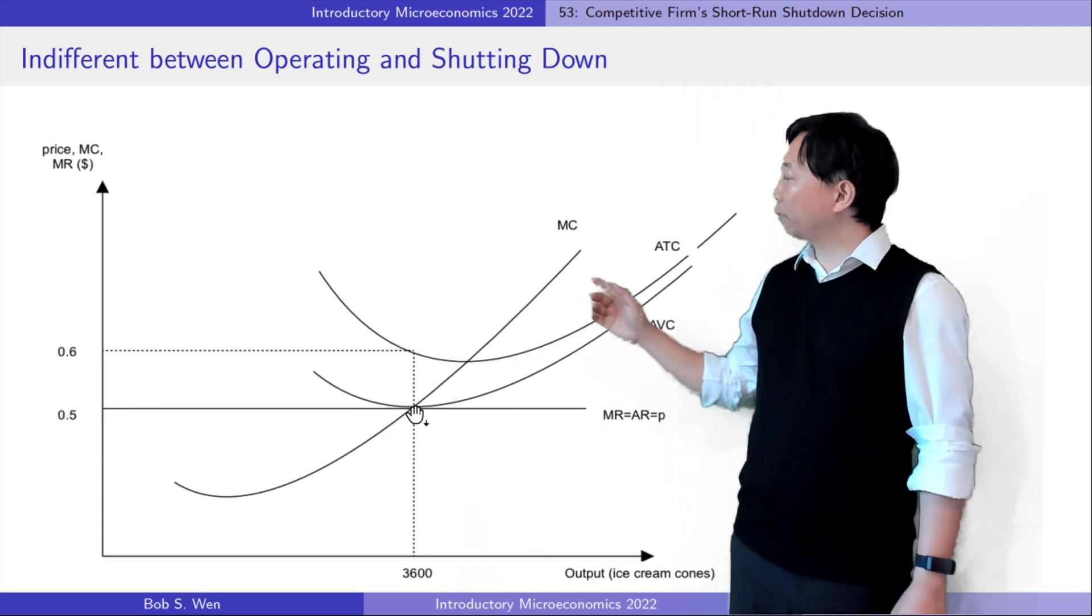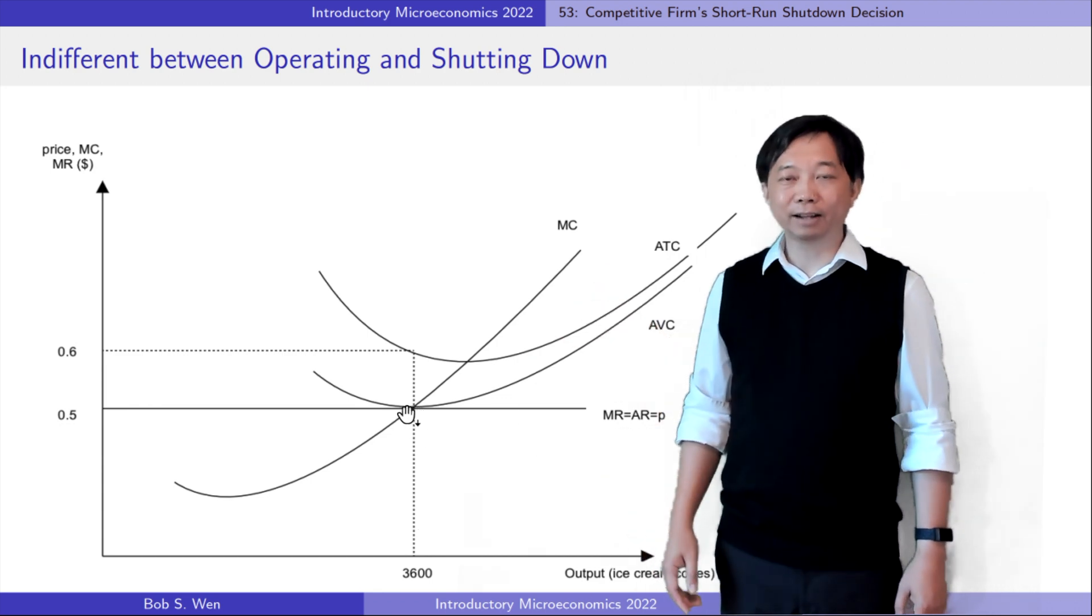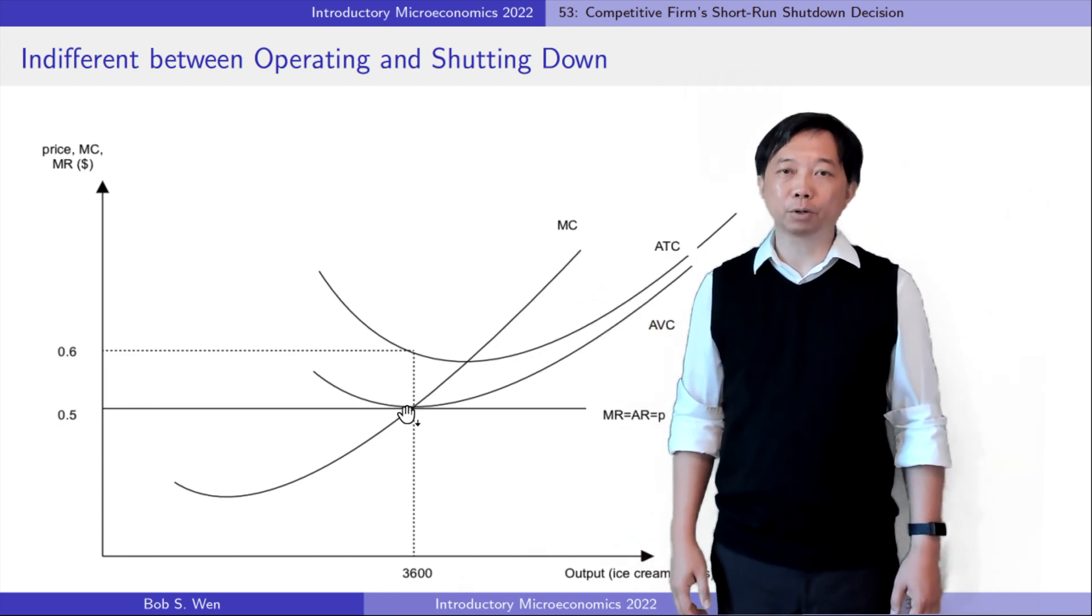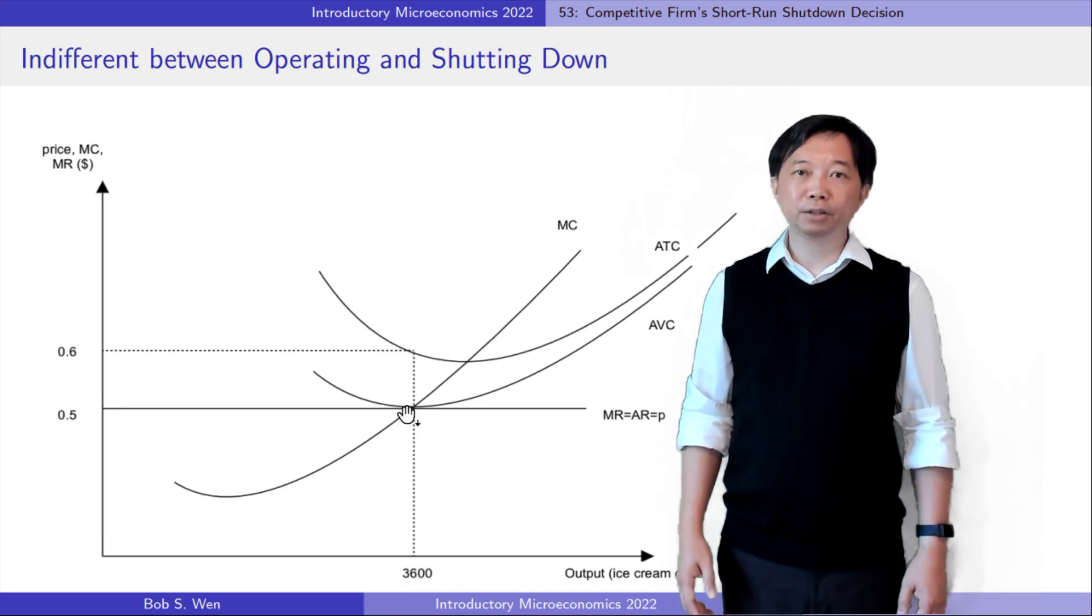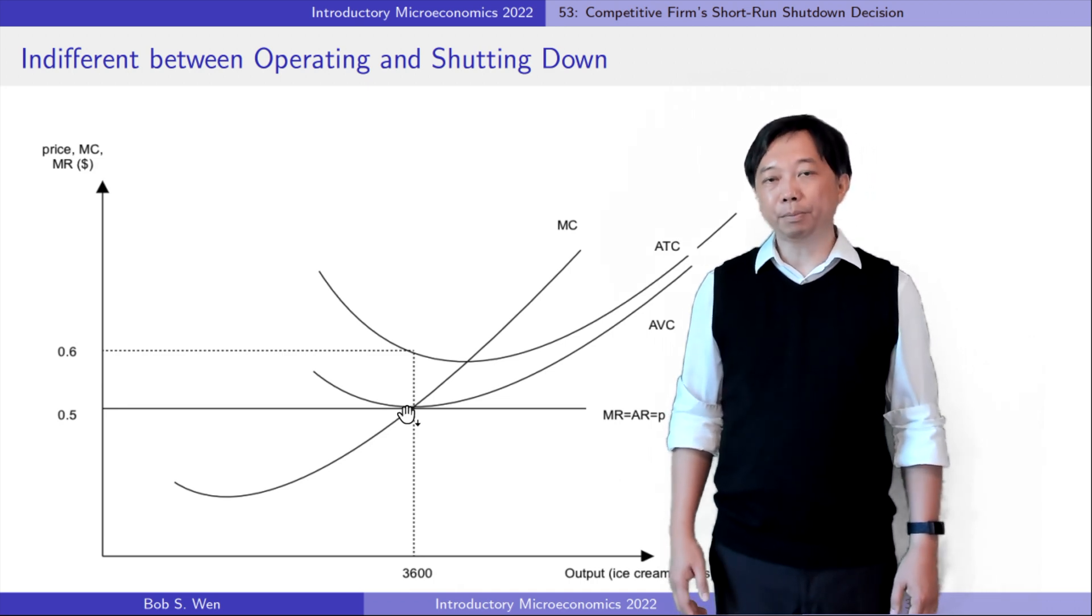Let's add the average total cost curve and the average variable cost curve to the graph because we need these curves to determine the profit.